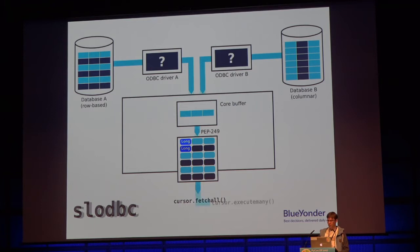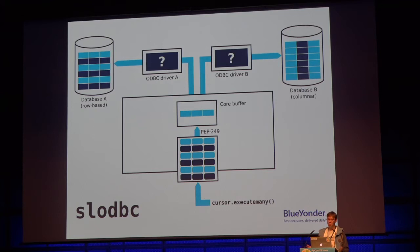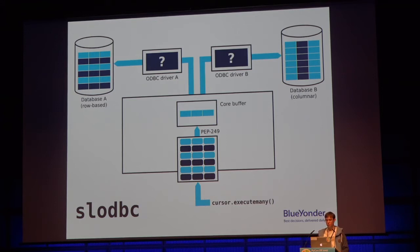The same basically happens in reverse — you need to transfer individual Python objects back into a binary representation that ODBC can work on, and transfer this back line by line when using the ODBC API in a simple way. So we have two obvious contributors that make things slow: first, doing everything line by line — parameter set by parameter set, row by row; and second, converting binary data already in a CPU-understandable format into Python objects.